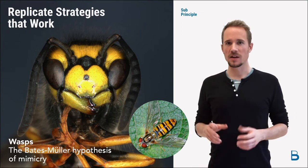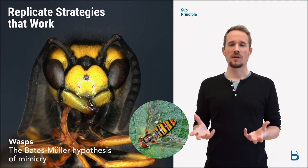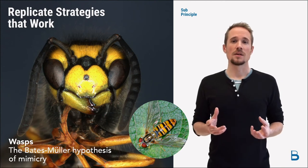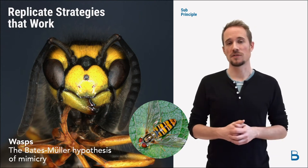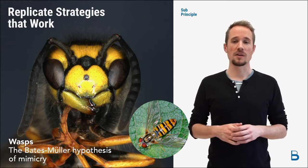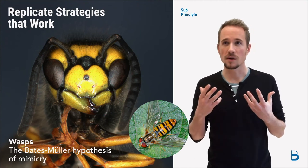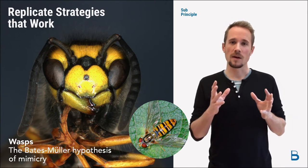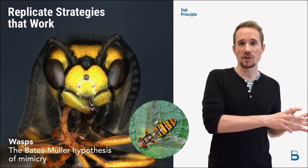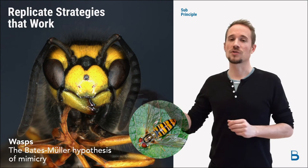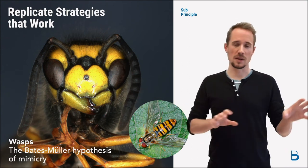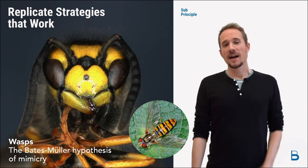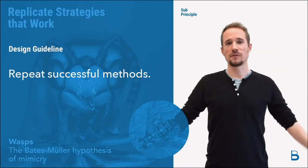Where do wasps live in our tree ecosystem? They are a very important part of the ecosystem of a tree. They are predators that eat other insects that might eat the leaves of the tree, for instance. They are very important parasitic animals — they actually often act as parasites to organisms that might be dangerous for the tree. And they live everywhere, flying around from here to there. Our design guideline here: repeat successful methods.